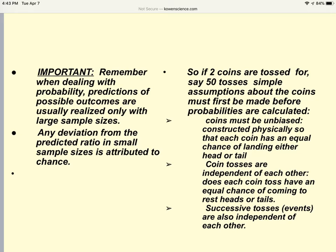If we were to look at the two coins that are tossed for, say, 50 tosses, simple assumptions about the coins must first be made before the probabilities are calculated. First, the coins must be unbiased, constructed physically so that each coin has an equal chance of landing on heads and an equal chance of landing on tails. The coins are tossed independently of each other. Does each coin toss have an equal chance of coming up to heads or to tails? And each toss event is independent of the previous tosses.